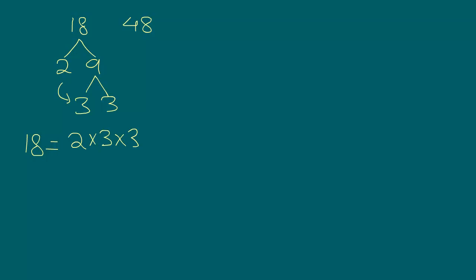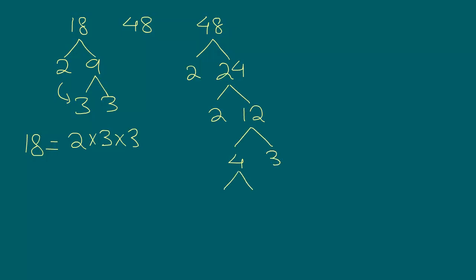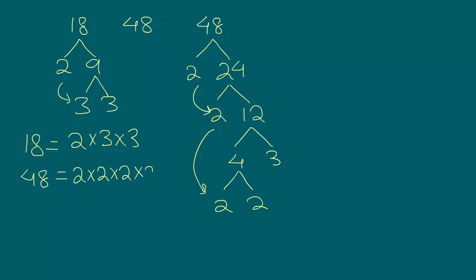Now what about 48? We can break down 48 as 2 times 24. Then 24 again we can break it down as 2 times 12, and 12 we can break it down as 4 times 3, and we can break down 4 as 2 times 2. So writing all the prime factors of 48, we have 2 times 2 times 2 times 2 times 3 — that is four 2's and one 3.